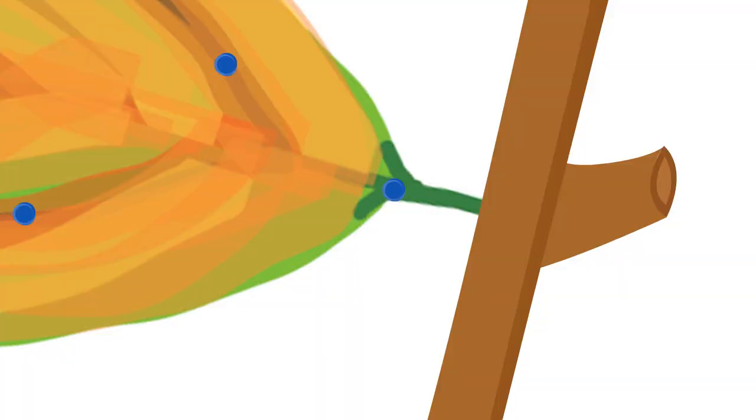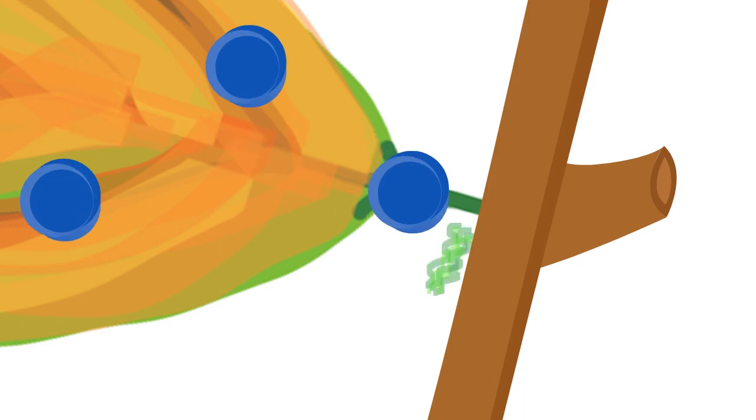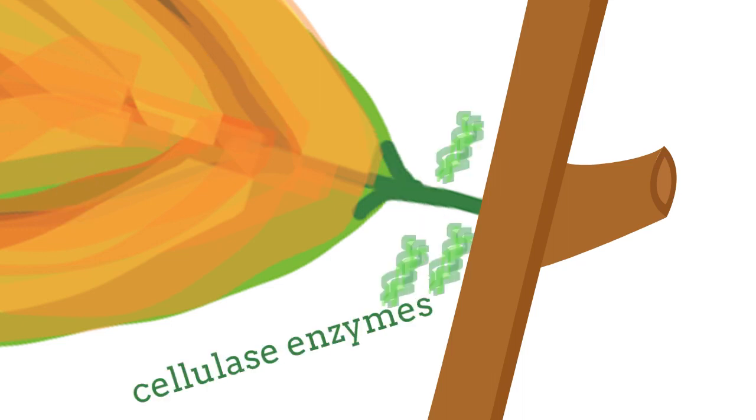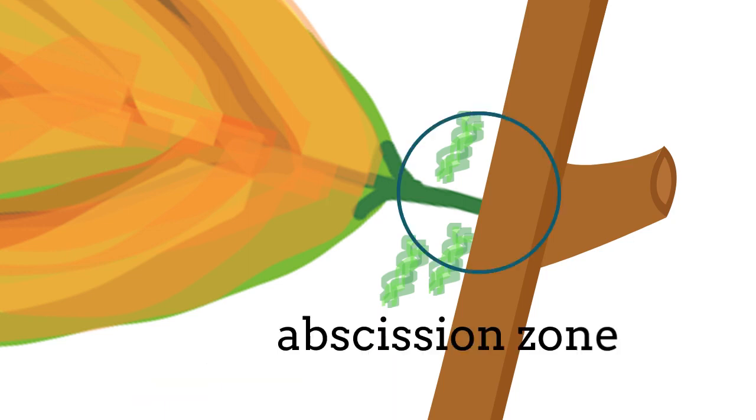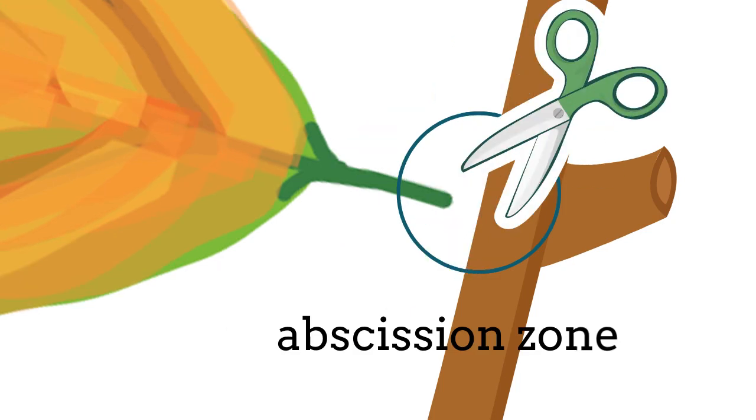Decreased auxin allows the concentration of ethylene hormone to increase and stimulates the production of cellulase enzymes. This enzyme breaks down cell walls in the abscission zone, which is the region connecting the leaf stem to the main zone called the petiole. This results in the leaf falling or shedding from the plant.